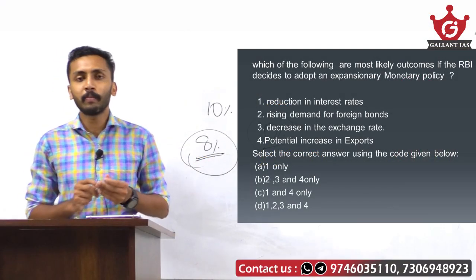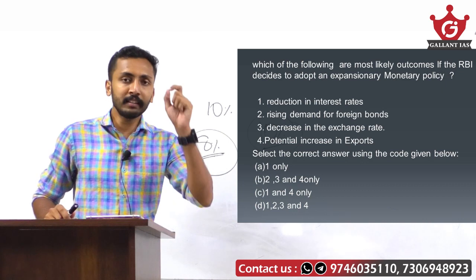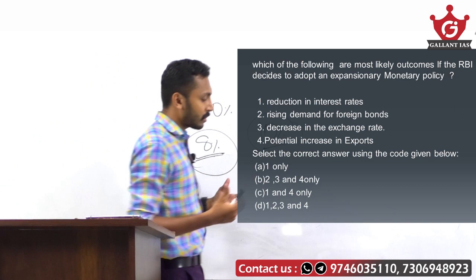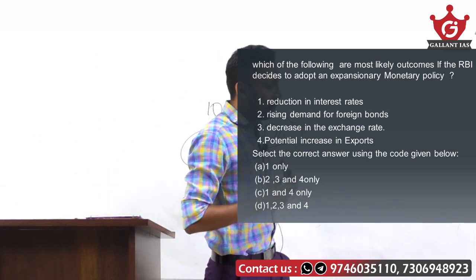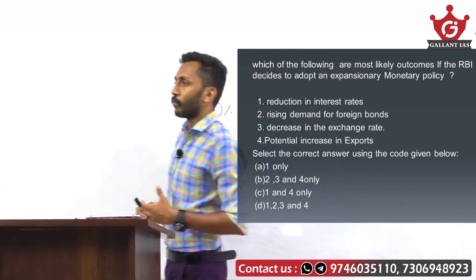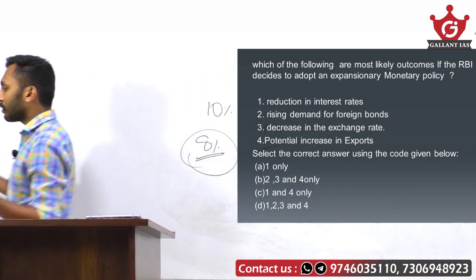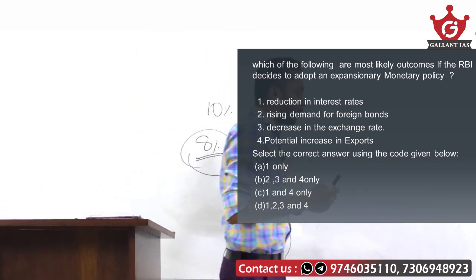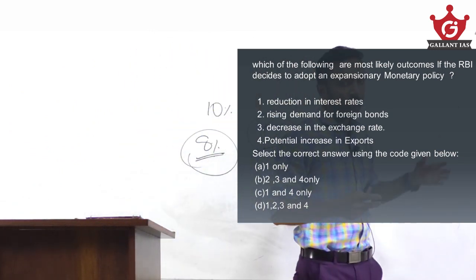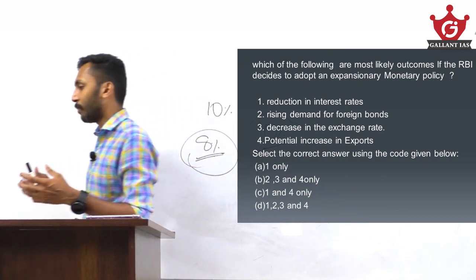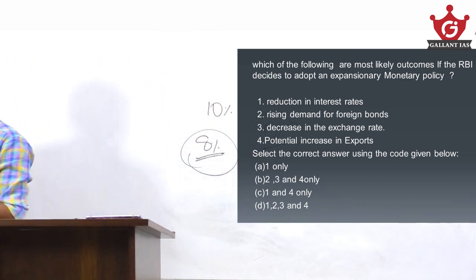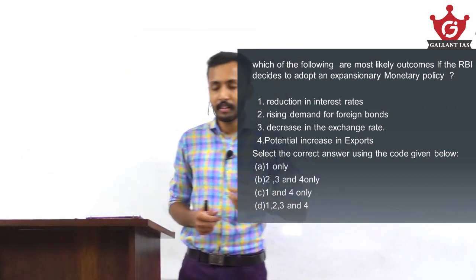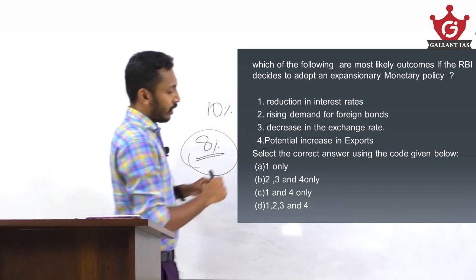Third: decrease in exchange rate. Expansionary monetary policy means more money is supplied into the economy, so more currency will be available. When any commodity is available in plenty, it will reduce demand — that is the basic demand-supply theory.